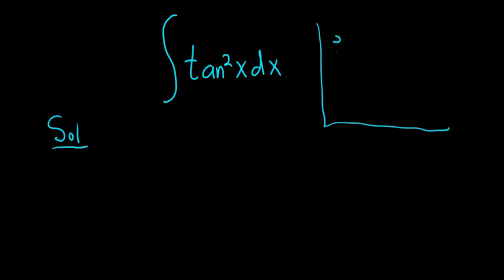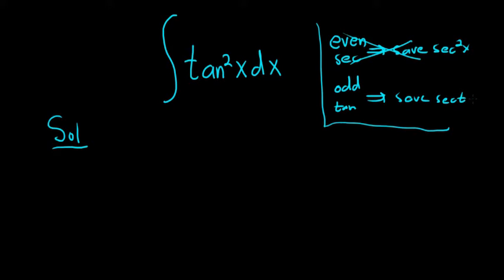So one general strategy is if you have an even power of secant, what you can do is save a copy of secant squared. Well, that does not apply here. And the other popular strategy is if you have an odd power of tangent, you can save a copy of secant tangent. So both of these are super powerful strategies, but again, does not apply here.